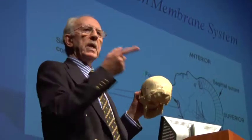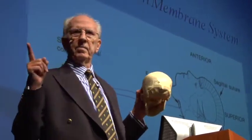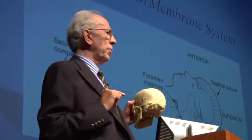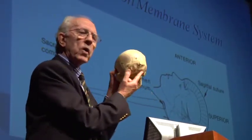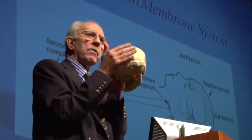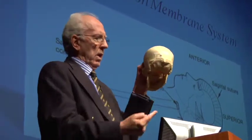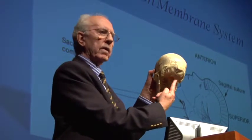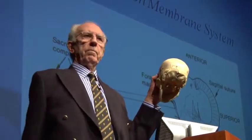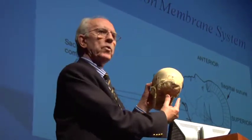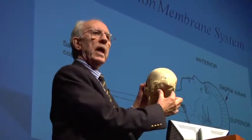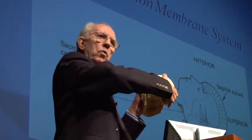Here we have where that head — that cranium — meets the first vertebra. This will be interesting to some of the practitioners here. Because of the distortion that we have with Henry, and the fact that the first vertebra articulates with Henry here, what's going to happen to that first vertebra, the atlas, is it's going to have to go with this, and also like so.